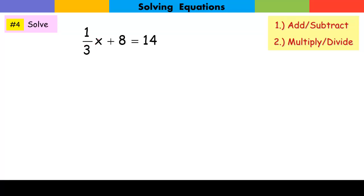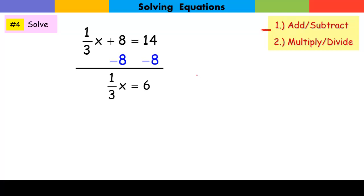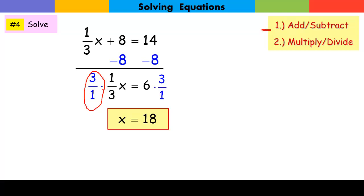Here we have one-third times x plus 8. The coefficient is 1 over 3. First step: subtract 8 from both sides to get the variable term alone. Now, to get x alone I need to get rid of the 1 third. I multiply by its reciprocal — two reciprocals multiply to give 1. Multiplying both sides by 3, x is now alone, and 6 times 3 is 18. So x equals 18.